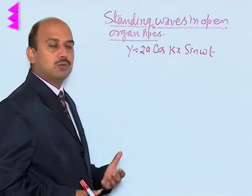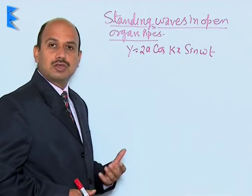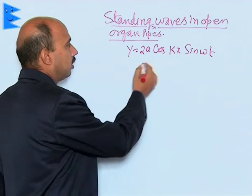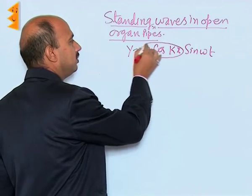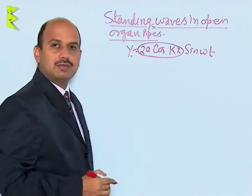Now see, open organ pipe is open at both ends, so at both ends antinodes are formed. Here, this quantity is representing amplitude, so y is maximum if this quantity is maximum.